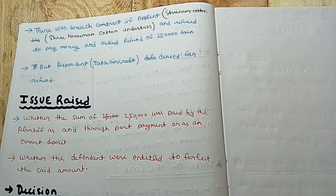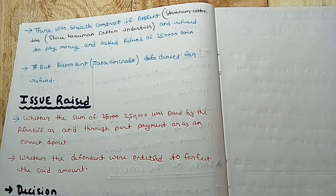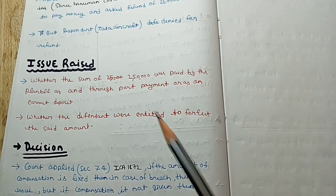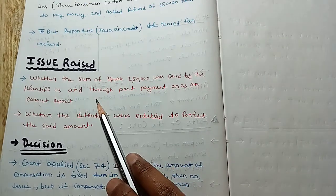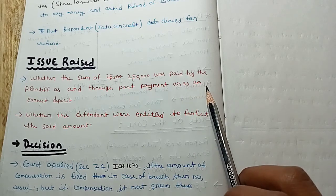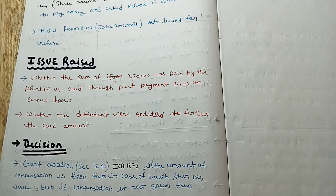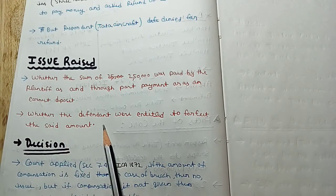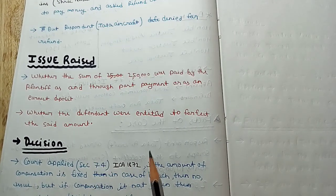Tata Aircraft denied to refund the amount. The issue was whether the sum of 2.5 lakh rupees paid by the plaintiff was part of the payment or an earnest amount. That is, did Sri Hanuman Cotton Mills pay the 2.5 lakh rupees as an installment or as token money? The further issue was whether the defendant, Tata Aircraft Limited, was entitled to forfeit the said amount.